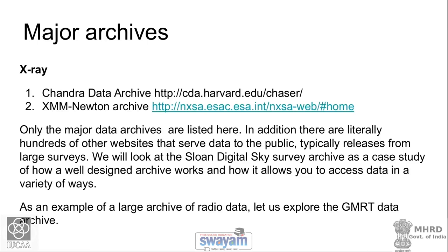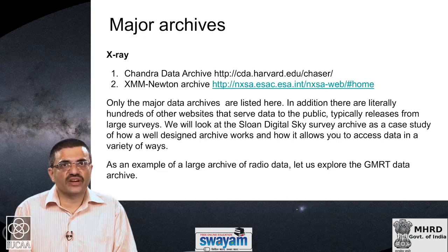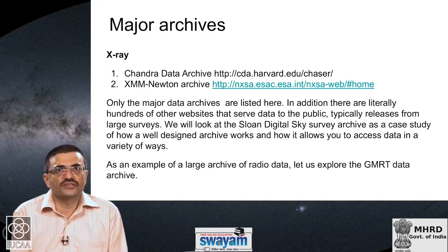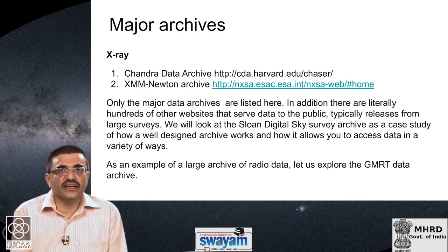In X-rays, there are two large telescopes which have been observing for many years. The Chandra telescope has its own Chandra Data Archive at Harvard, and the XMM-Newton Archive is a European-led X-ray telescope with its own large archive. In addition to the archives described here, there are literally hundreds of other websites that serve data from large surveys. We will look at the Sloan Digital Sky Survey archive as a case study of how a well-designed archive works and how it allows you to access data in a wide variety of ways.